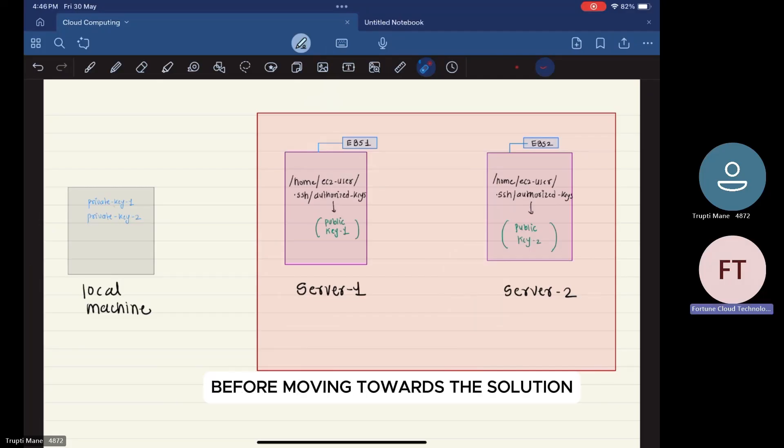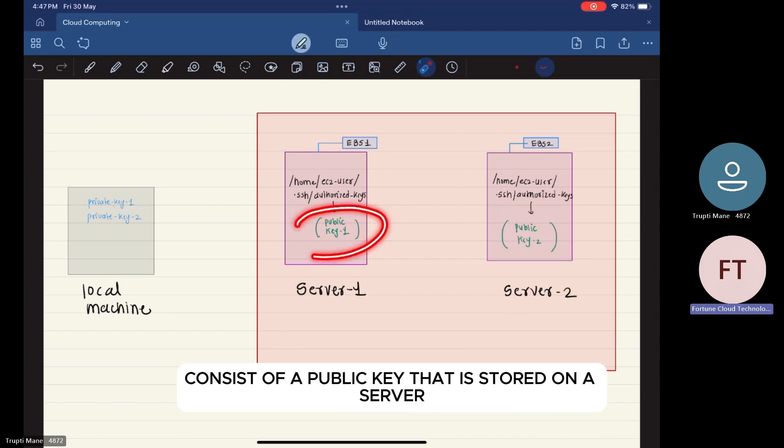Before moving towards the solution, let us understand what are key pairs. A key pair consists of a public key that is stored on a server and a private key that is stored on a local machine.